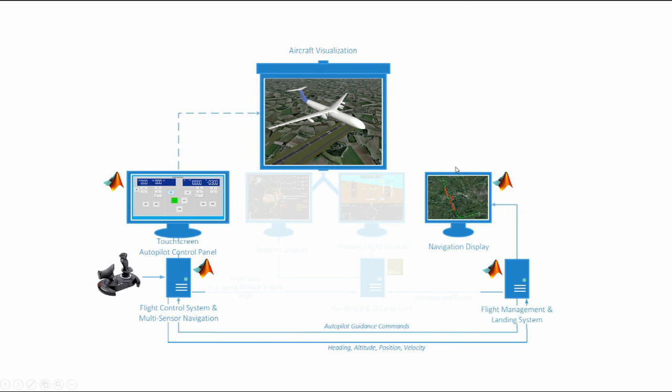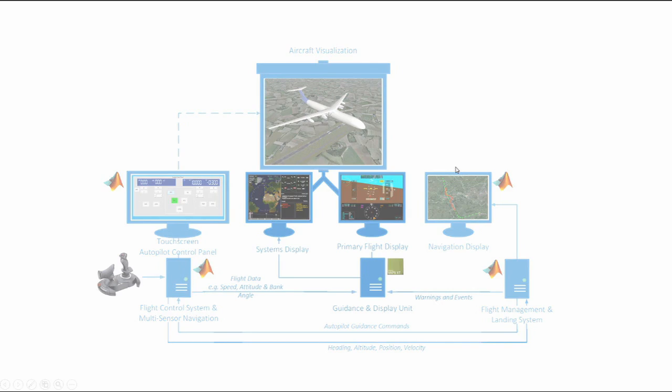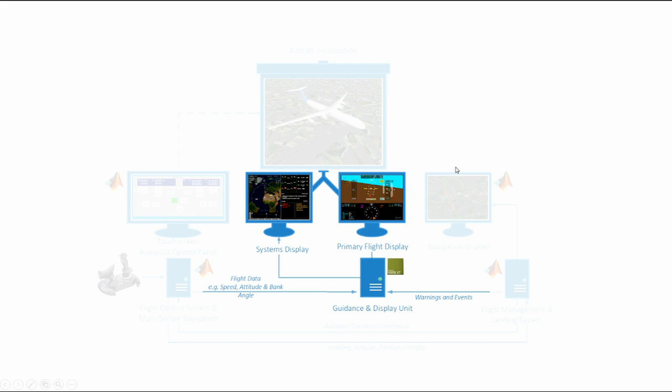Lastly, the guidance and display unit, implemented in VAPS-XT, displays the flight data parameters it receives via MATLAB communication with the flight control computer. The three computers were connected using Simulink and MATLAB UDP communication blocks.